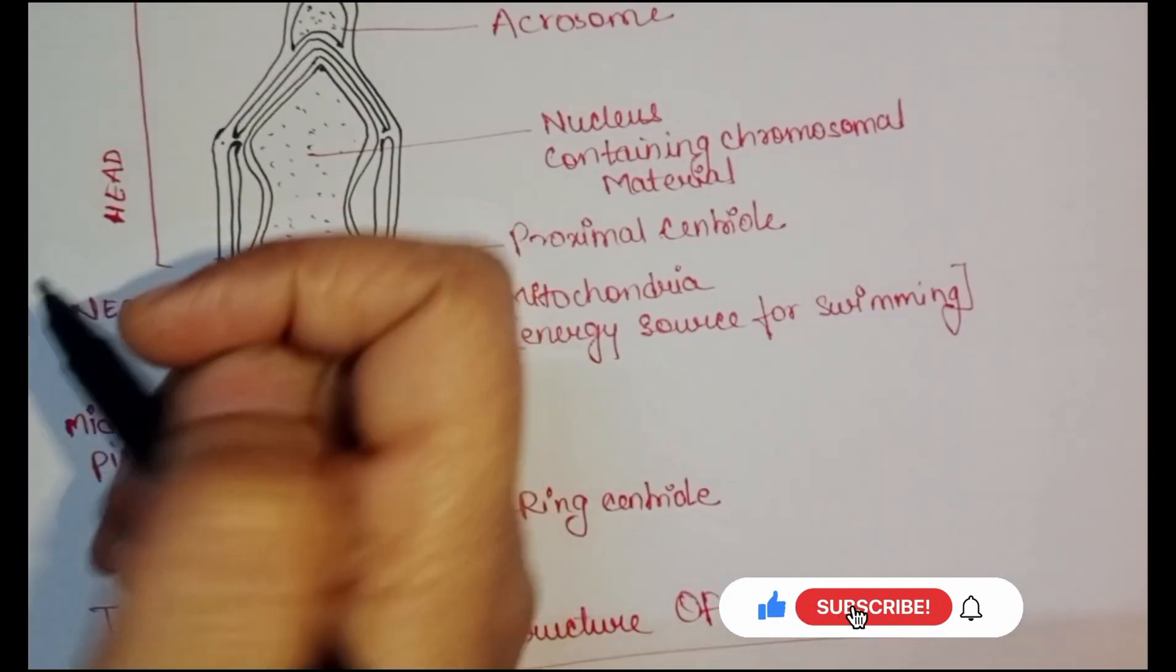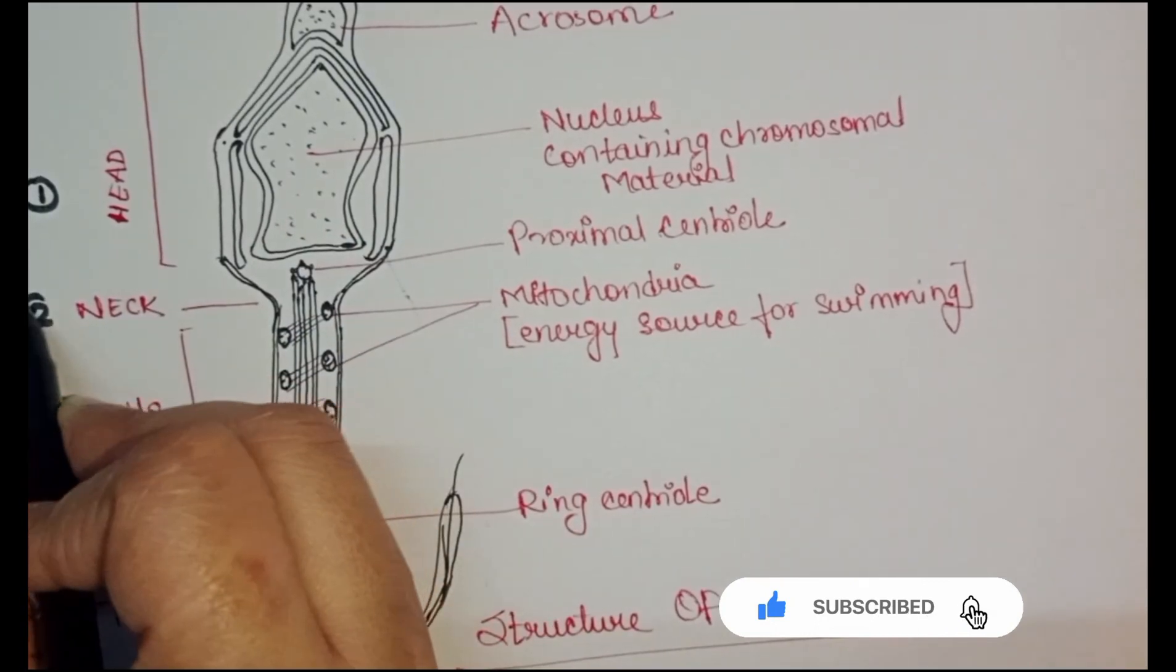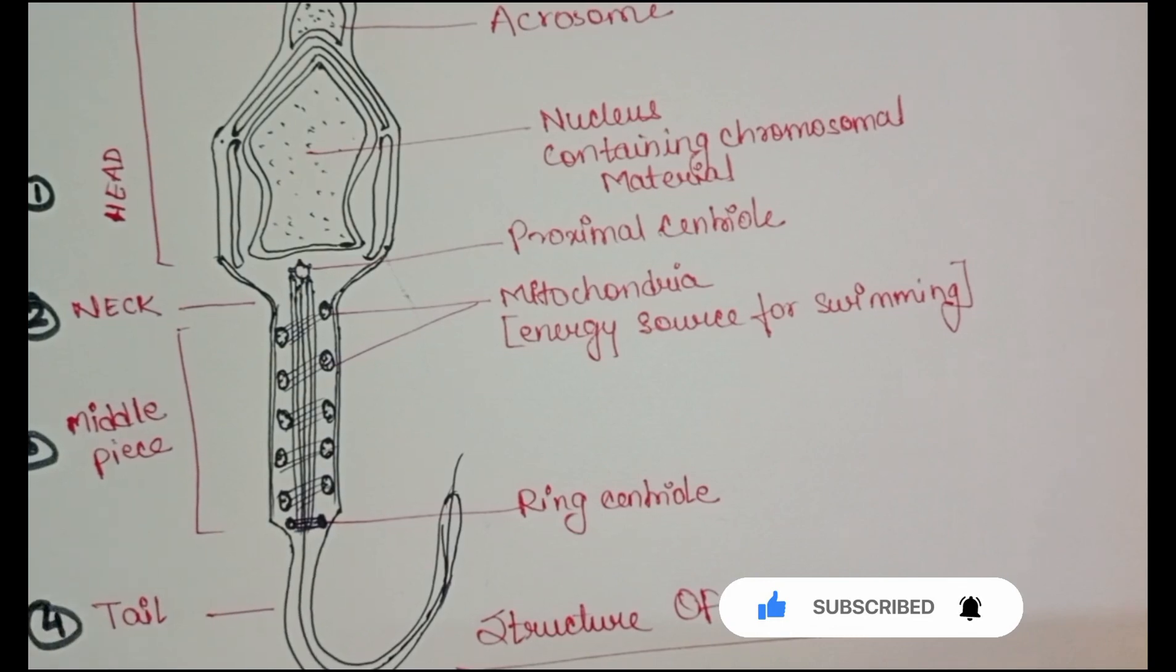Sperm is composed of a head, a neck, a middle piece, and a tail.